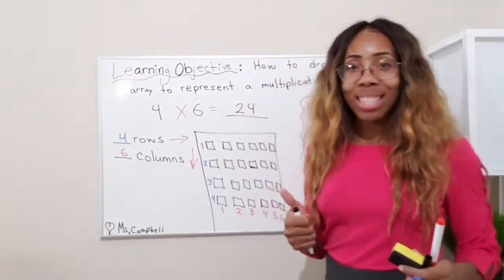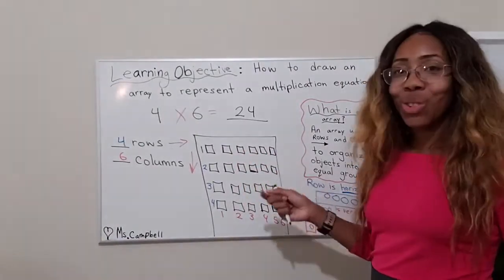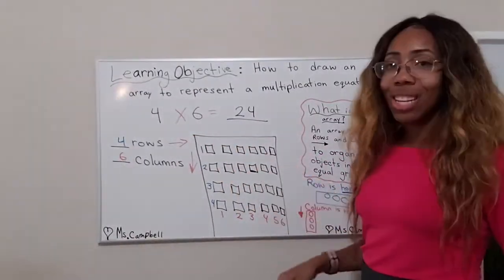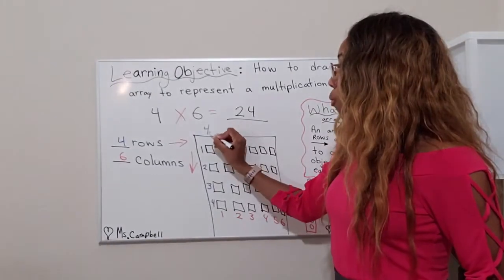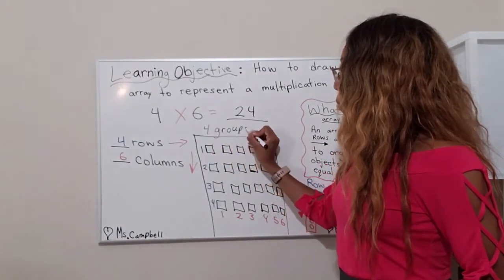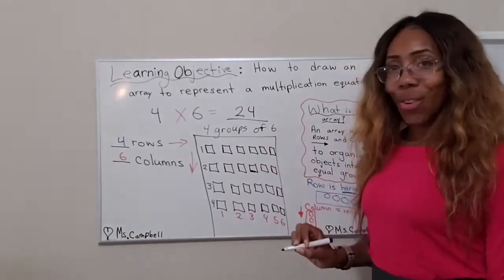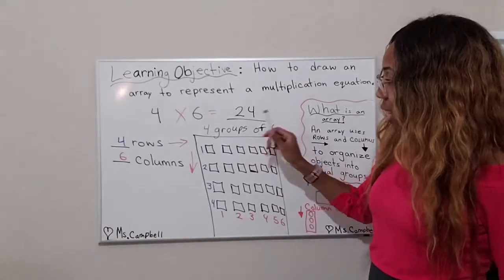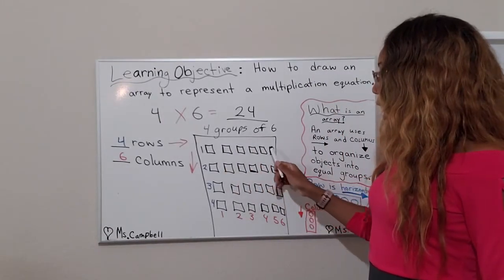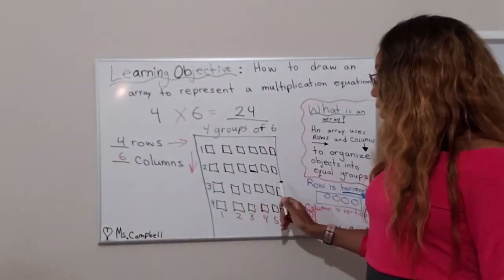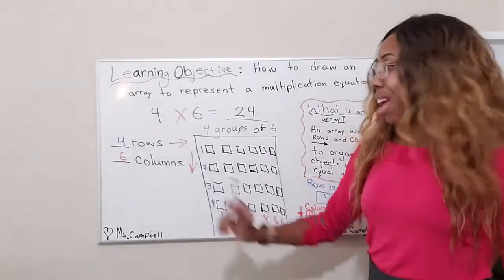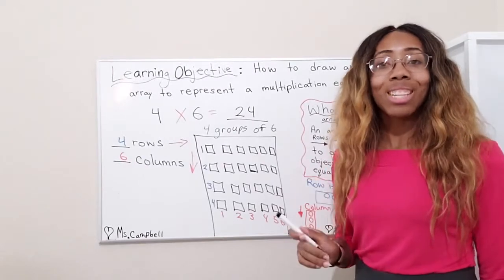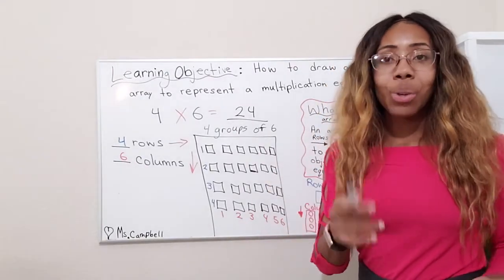I'm back! I hope you solved the answer and were able to show me an array. I used squares this time. My array shows four groups, and in each group there are six objects — four groups of six. Group one: one, two, three, four, five, six. Group two: one through six. Group three: one through six. Group four: one through six. That's four rows and six columns. Four times six equals twenty-four. You can count by fours, by sixes, or by ones — whatever strategy works best for you.